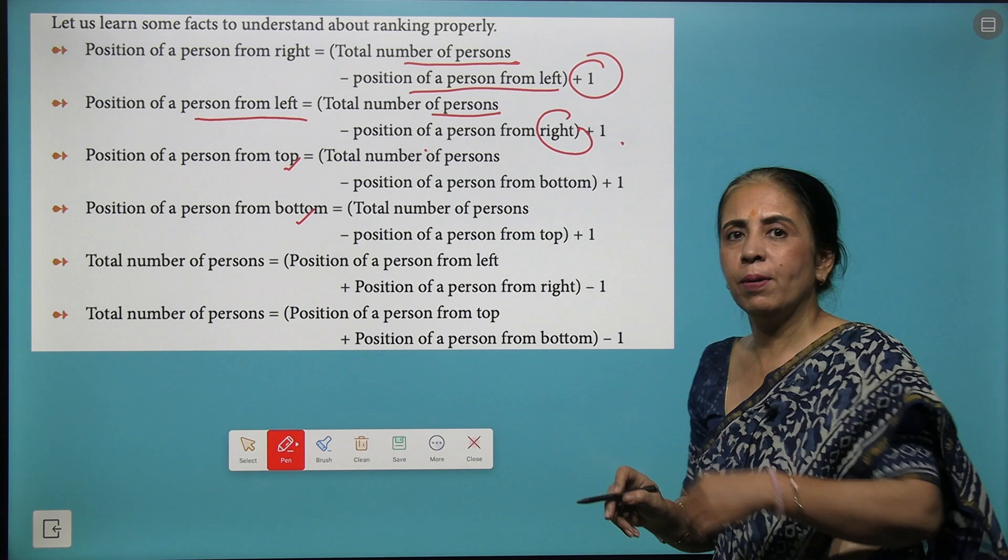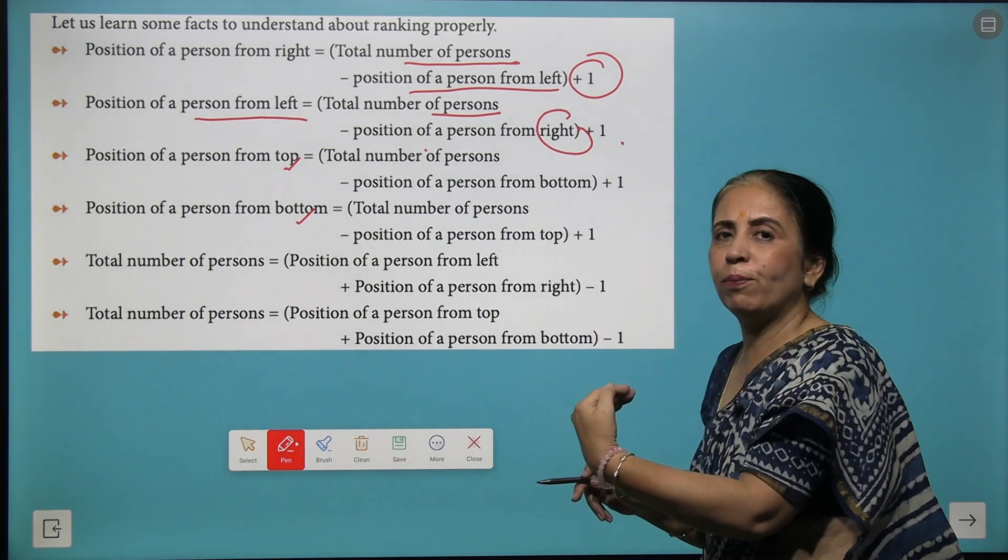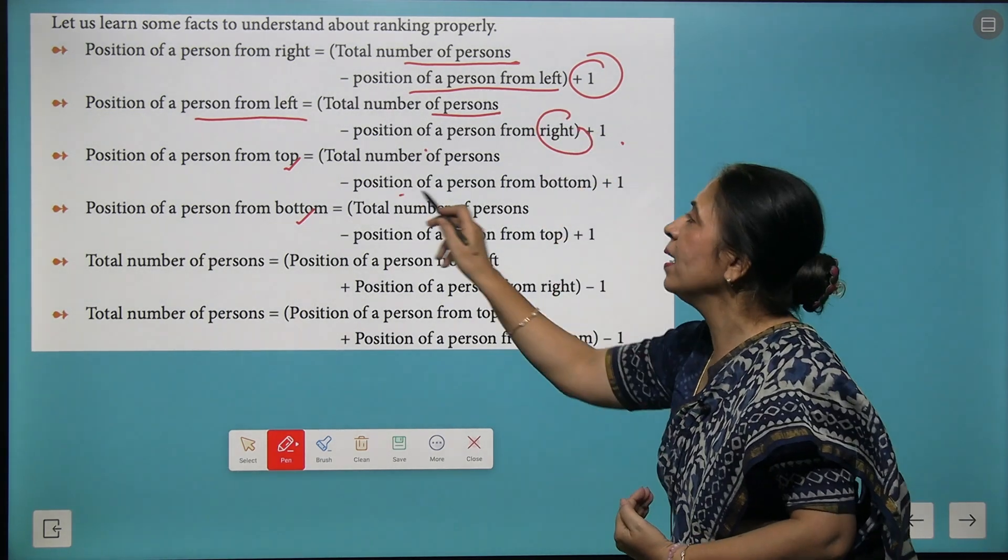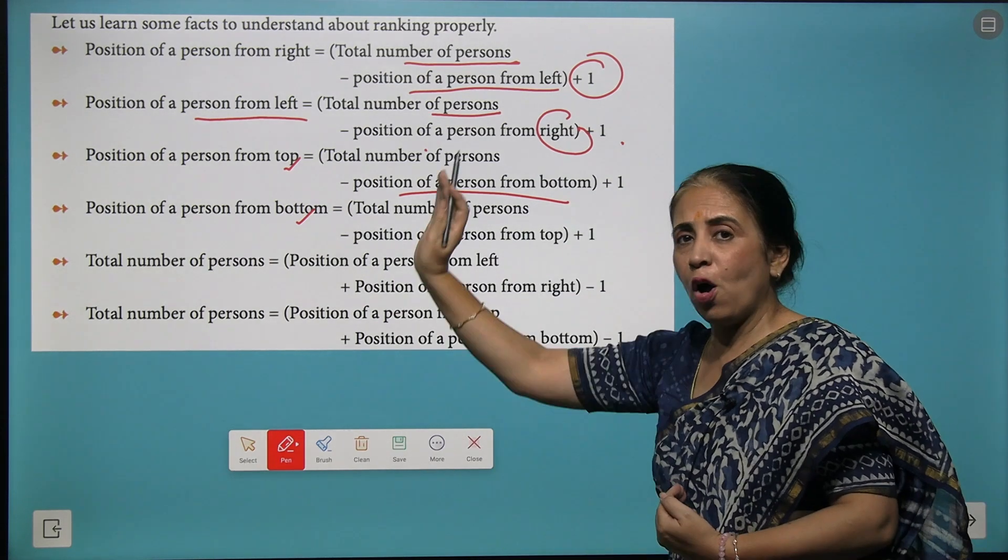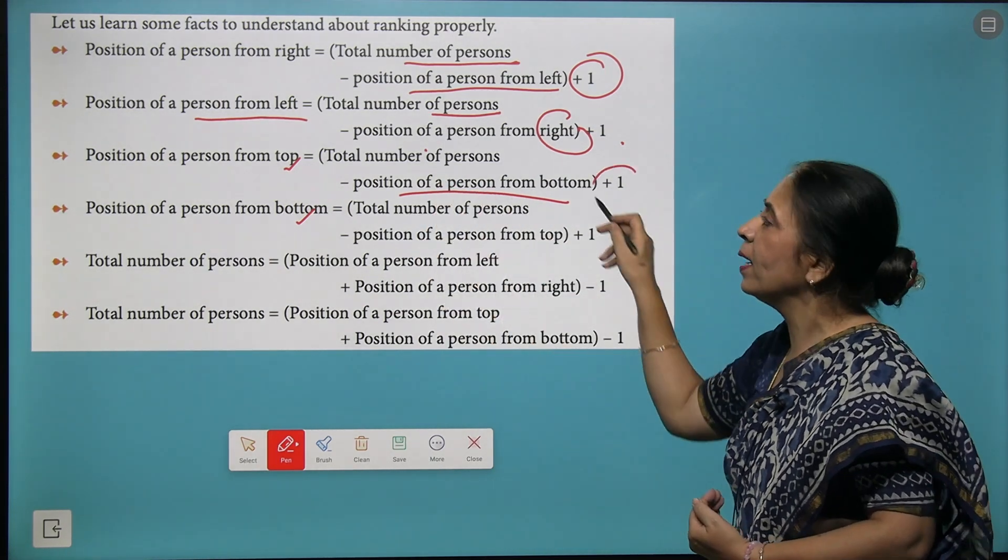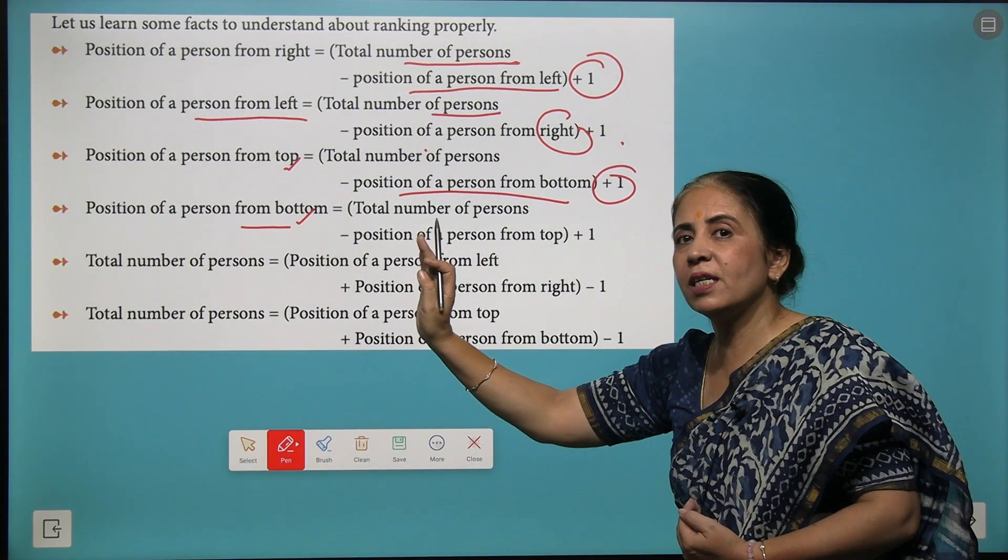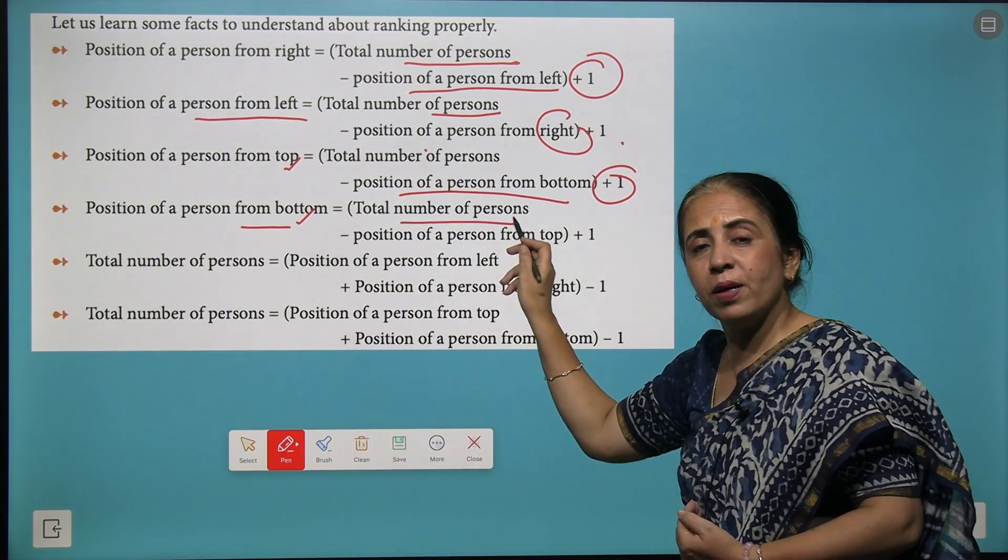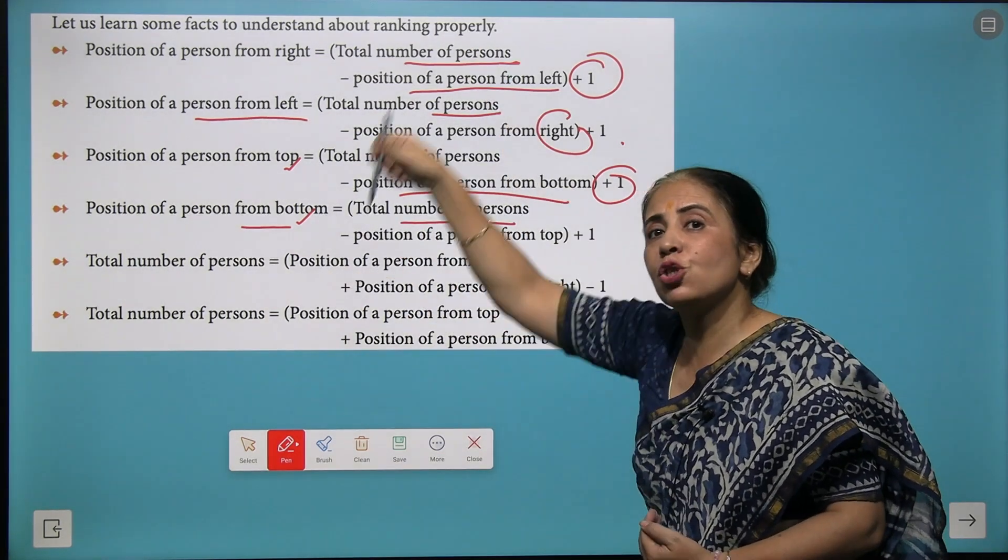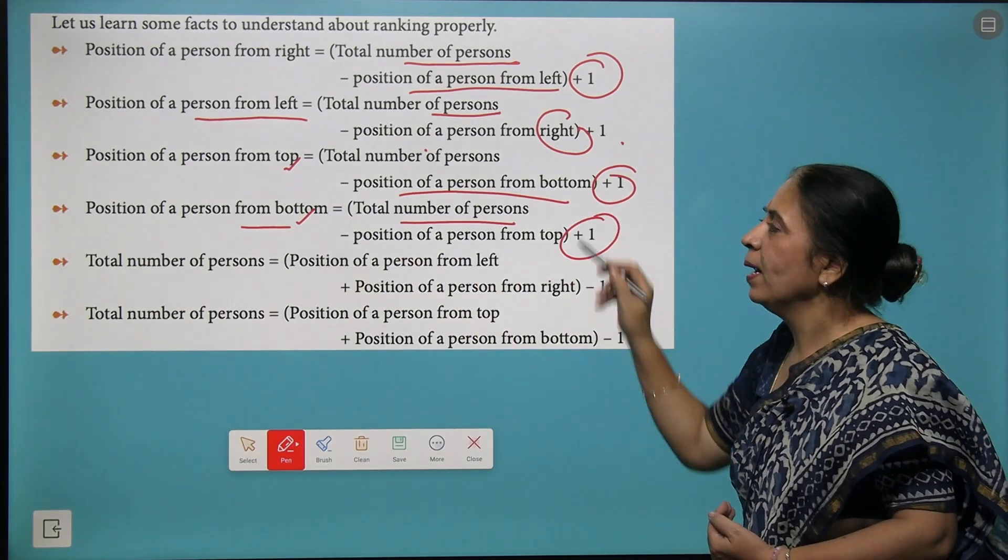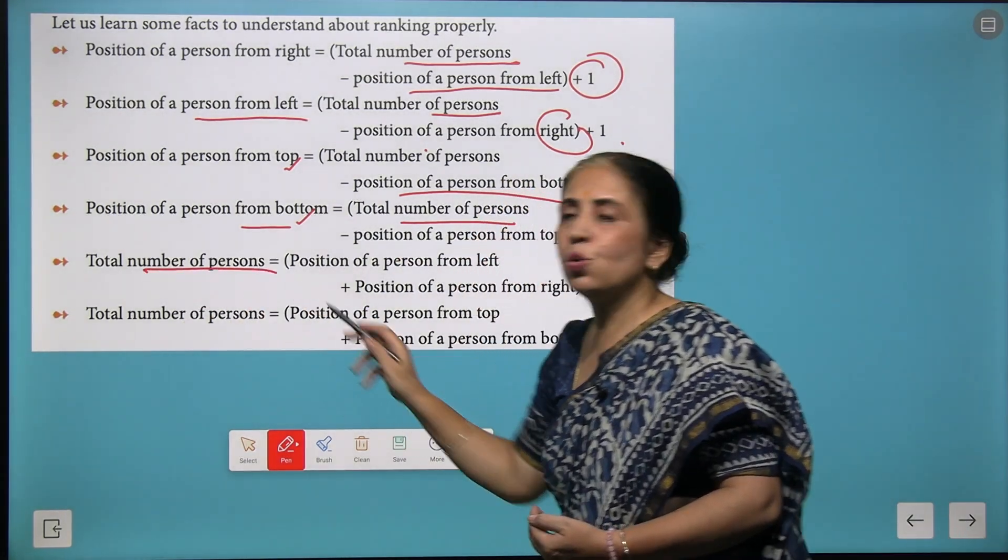The same thing is applicable when you go from the top and the bottom. Counting the position from the front is calculated by total number of persons minus the position of the person from the top plus one.